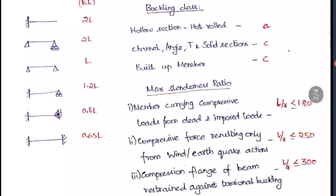The maximum slenderness ratio limits are very important. When a member carries compressive loads from dead and imposed loads only, it should be ≤ 180. When loads result only from wind or earthquake actions, it should be ≤ 250. When a compression flange of a beam is restrained against torsional buckling, it should be ≤ 300.